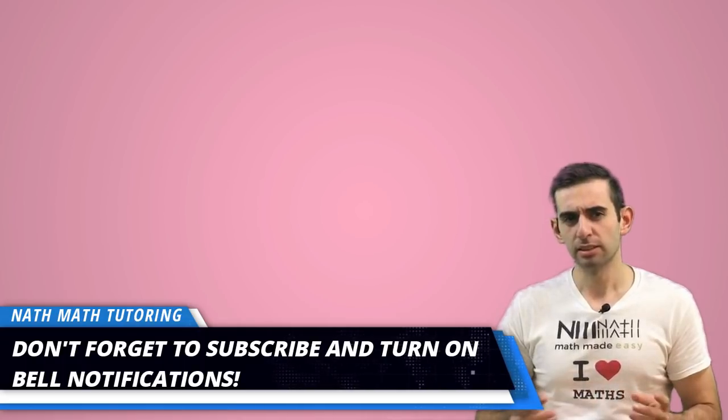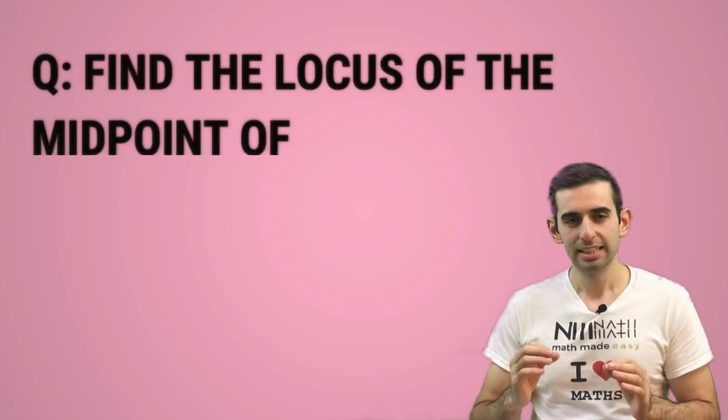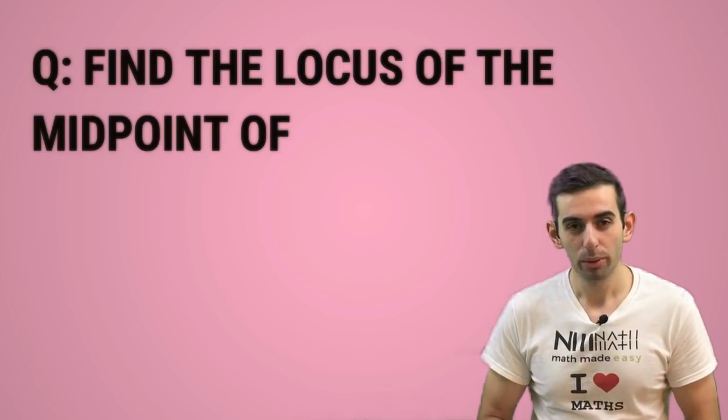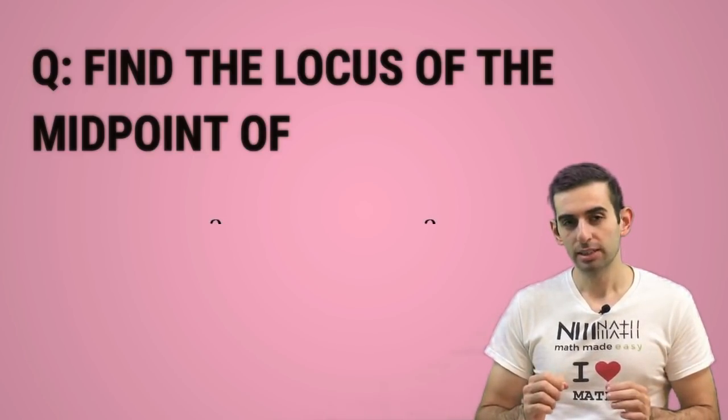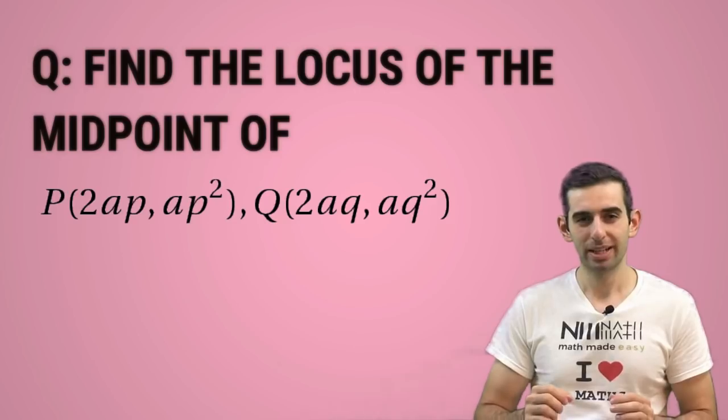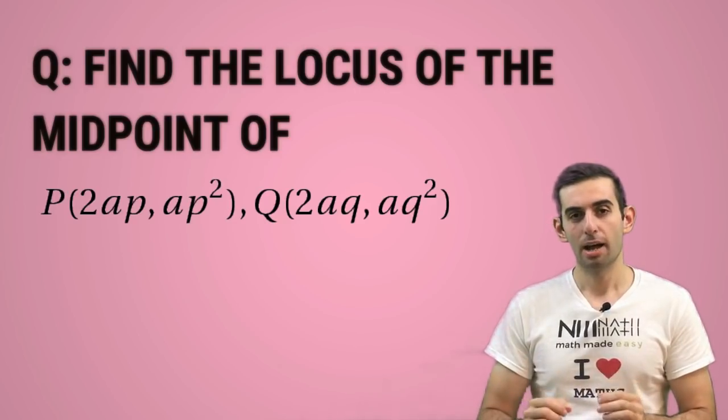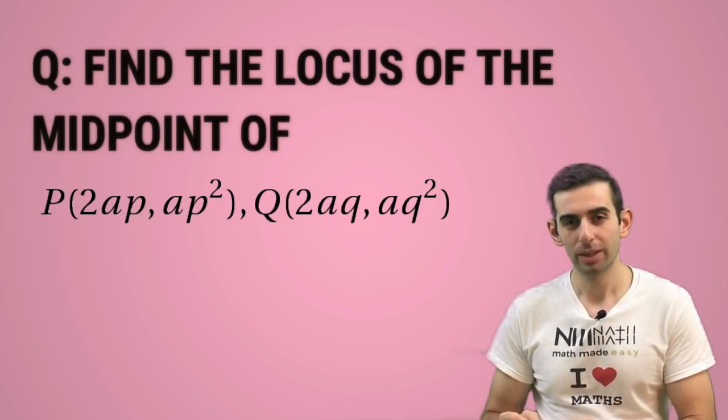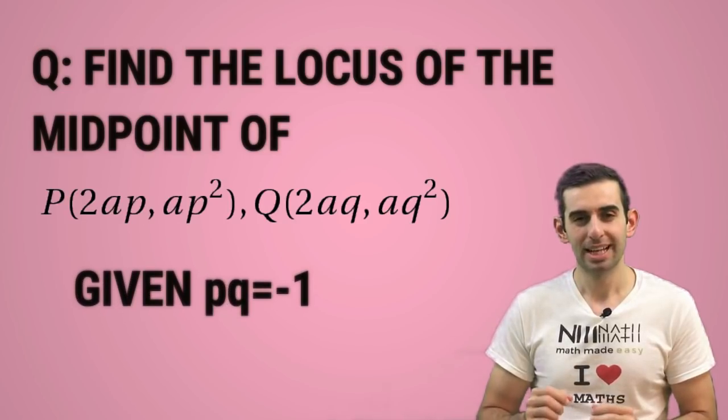Alright, let's not waste any more time. Don't forget to subscribe and turn on those notifications. Our question is: find the locus of the midpoint of P(2ap, ap²) and Q(2aq, aq²) given that pq equals negative 1.